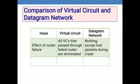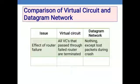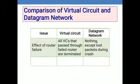In datagram networks, if a router fails, nothing major happens except for lost packets during the crash. The datagram network does not depend on pre-established routes — it simply transmits packets without concern for whether destination routers have failed. Only packets lost during the crash itself are affected; router failure is not a major issue since there is no pre-arrangement.